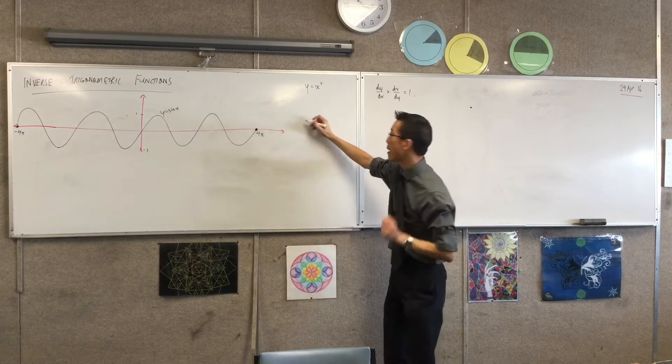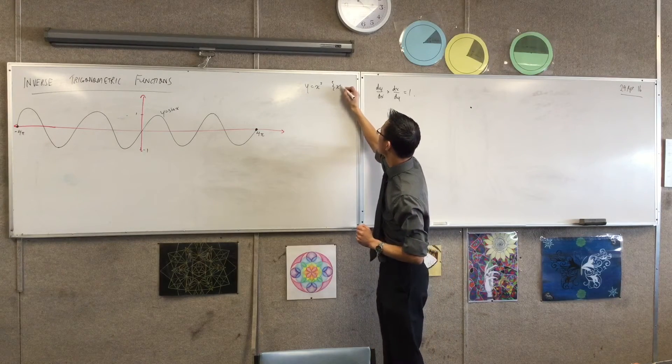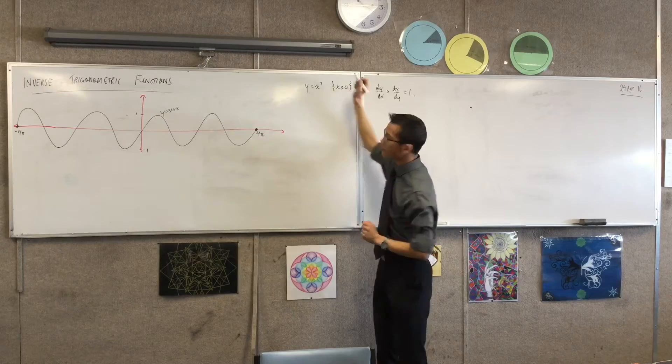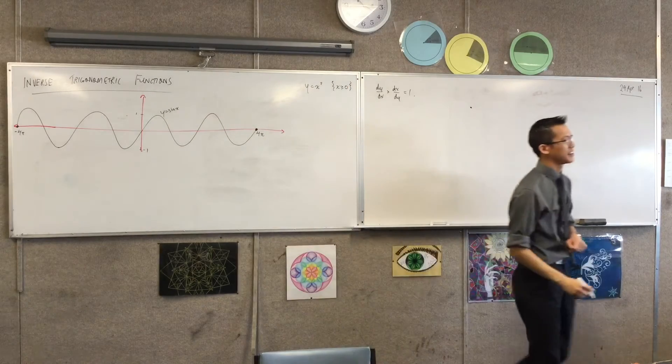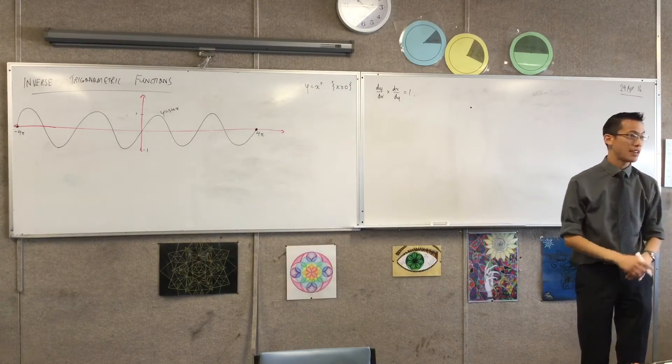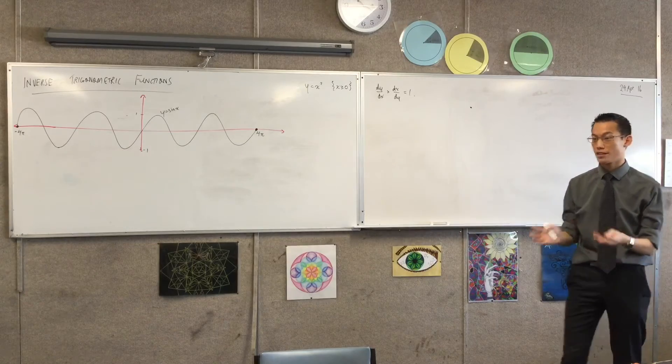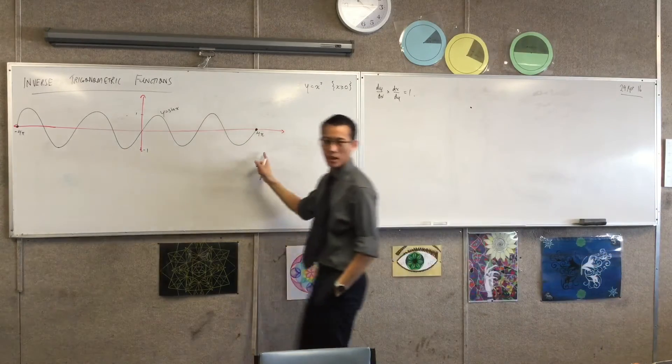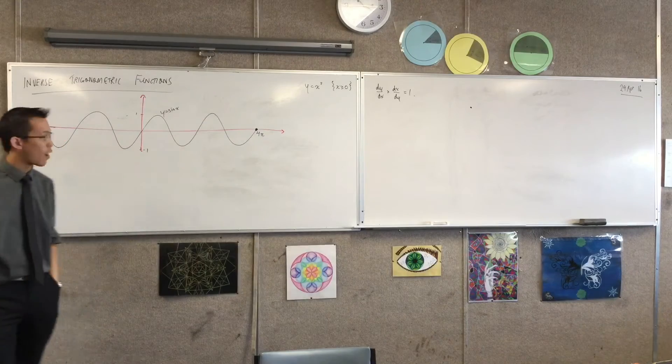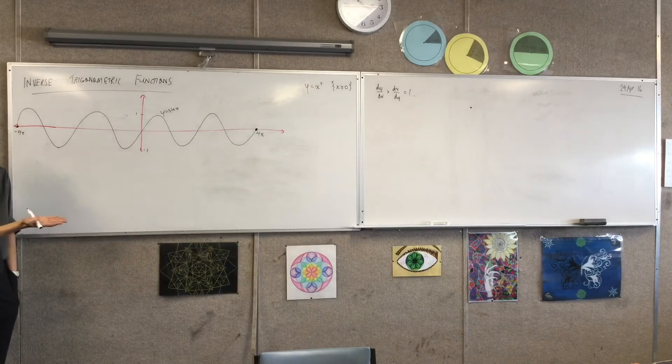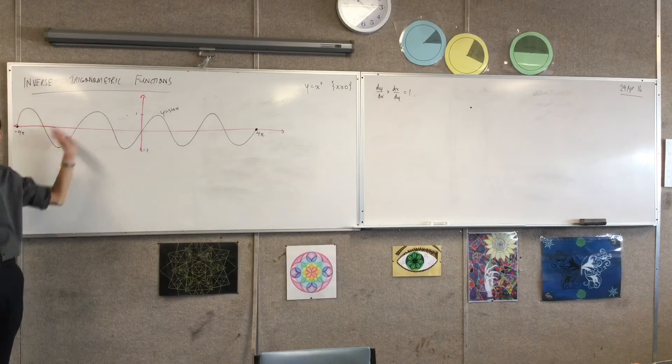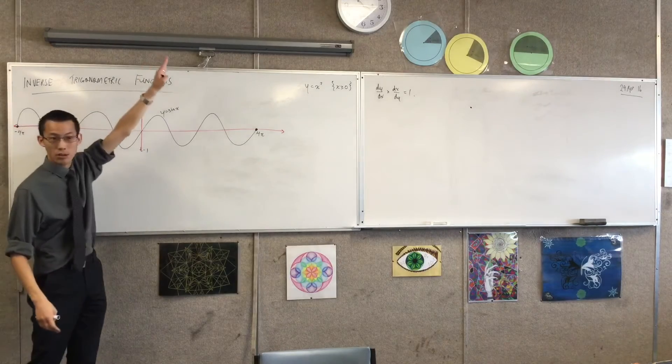Yeah we restricted the domain right. So when you have a look at this, that guy that has an inverse function passes the horizontal line test, so its inverse passes the vertical line test and we're fine right. So you have a look at this guy and you think in exactly the same way. This clearly has no inverse right.